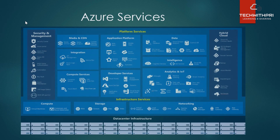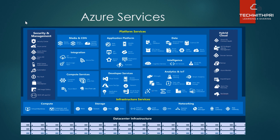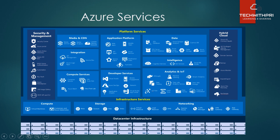Now let's look at the services Azure provides. There's a picture from Microsoft itself showing Azure services in a well-structured format. At the bottom we have data center infrastructure. Under infrastructure services, Azure provides compute — including virtual machines and Azure Kubernetes containers — storage with four types we'll discuss in separate videos, and networking including virtual network, DNS, and VPN Gateway.